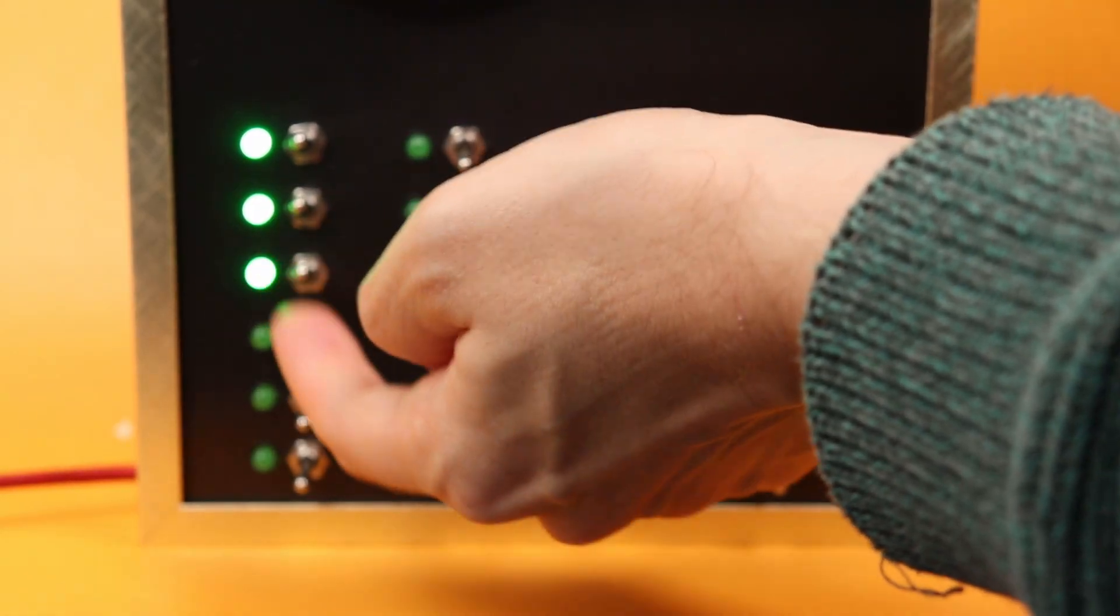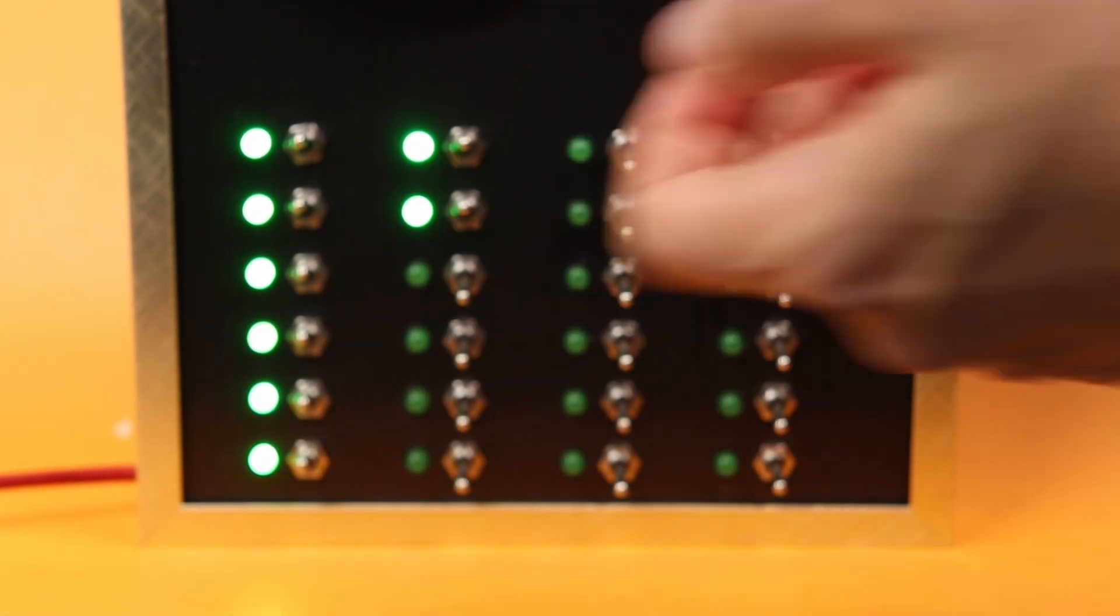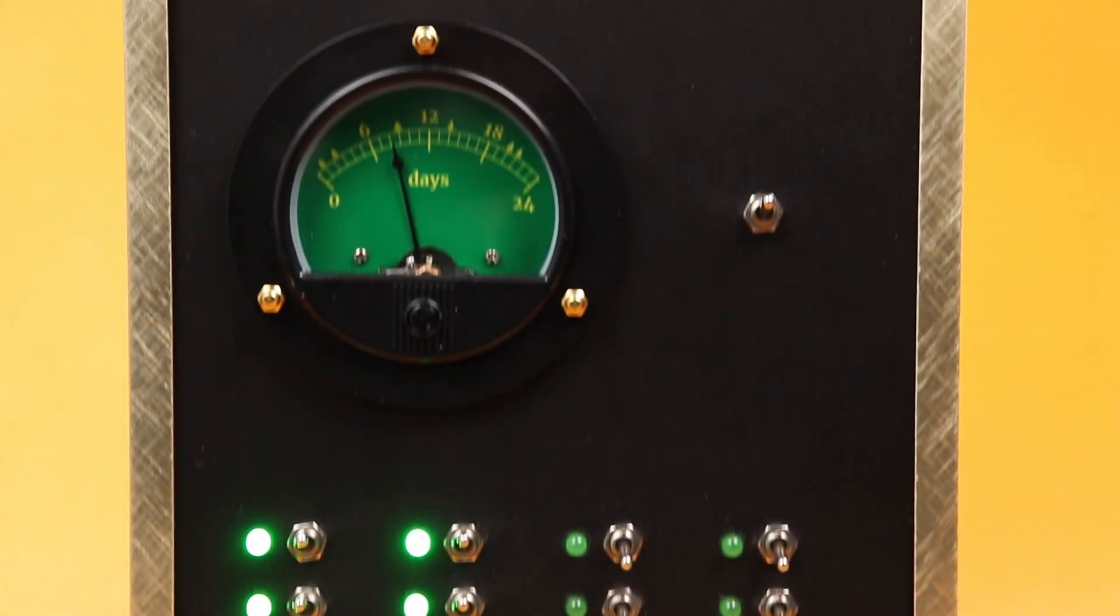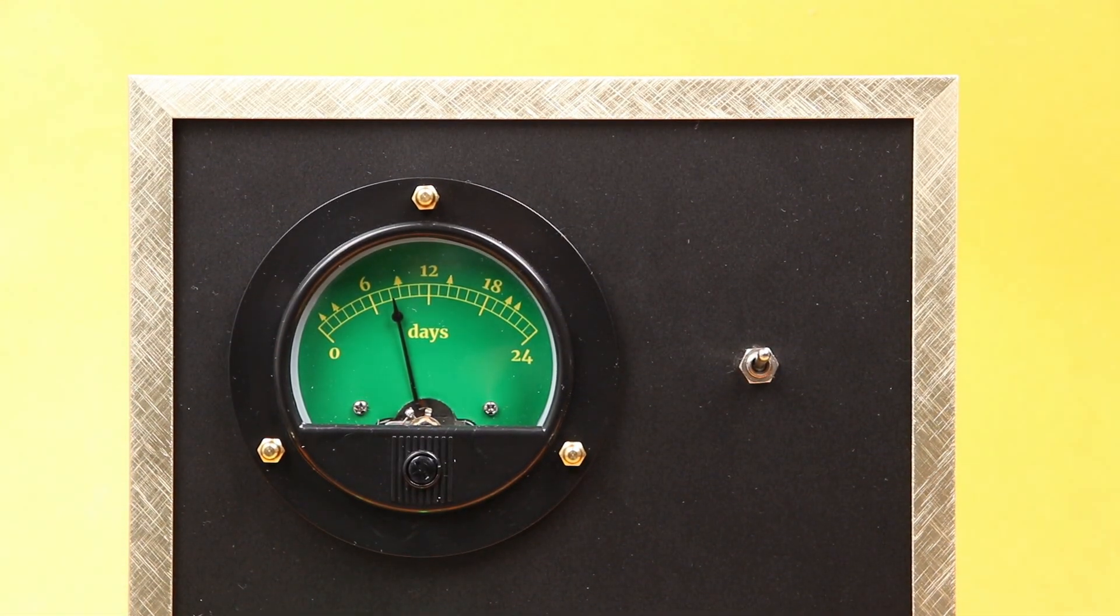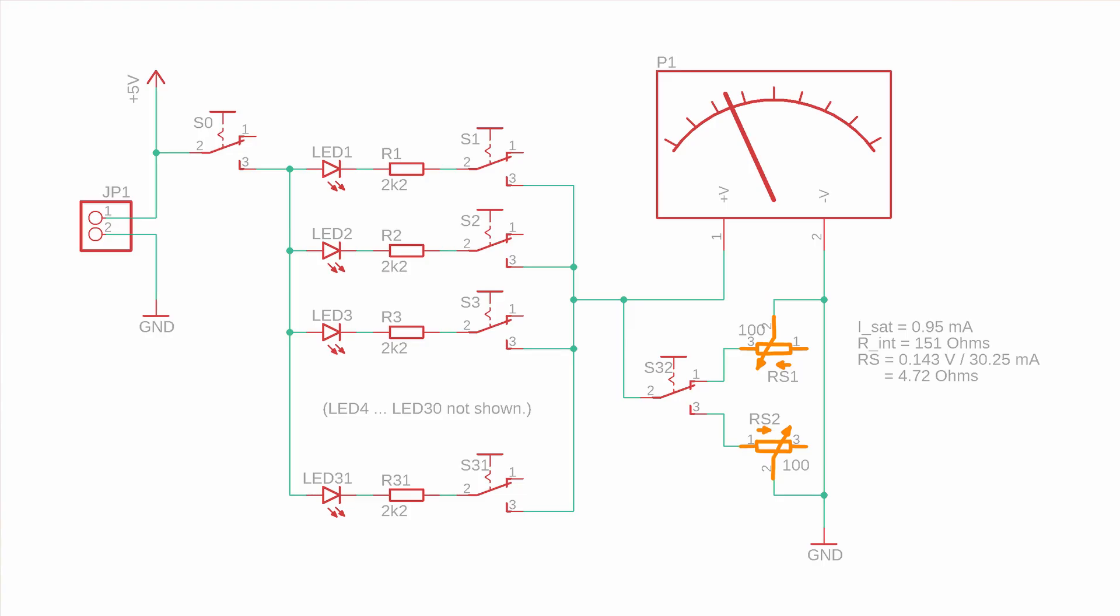And remember you can make this a 30 or 31 day calendar simply by adding more LEDs and switches and by adjusting the shunt potentiometer. And if you want this to be a 30 and 31 day calendar at the same time you can have two shunt potentiometers that you then calibrate separately and you switch between them for a month with 30 days and for months with 31 days with a simple toggle switch in a circuit like this one right here. And all of this just with passive components. I mean how amazing is this?